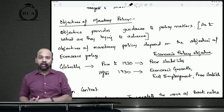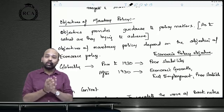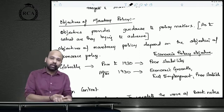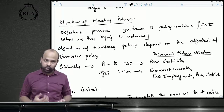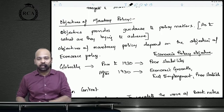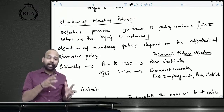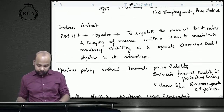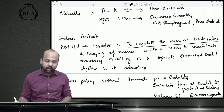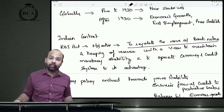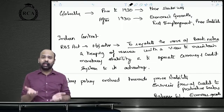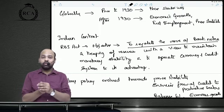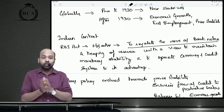Prior to 1930, the objective of economic policy was only price stability. After 1930, it expanded to include economic growth and full employment. When the RBI Act was established, the objective was to regulate the issue of banknotes, keep minimum reserves to maintain monetary stability, and use the currency and credit system to its full advantage.